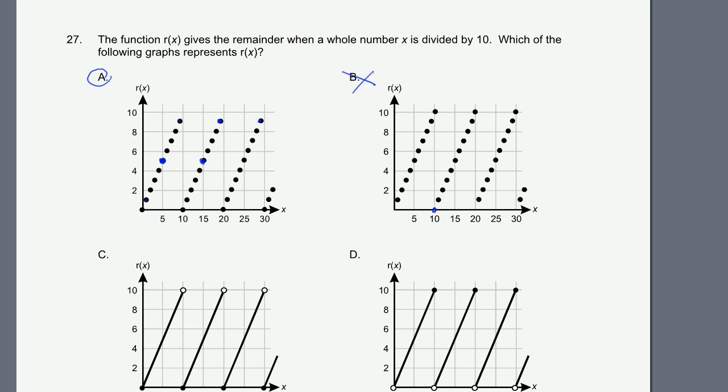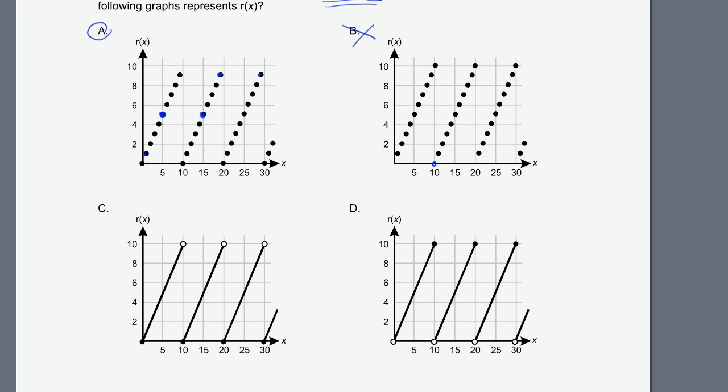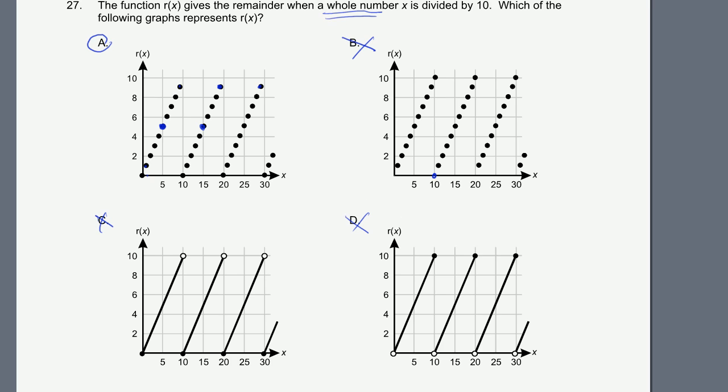And then here, the remainder when a whole number x is divided by. This is a whole number, right? Whole number x. Here, they're doing it for essentially all of the real numbers, right? This would be true if they said any real number. But they're including fractions because they're filling in the gaps right here. So C and D are not dealing with whole numbers. So our answer is definitely A.